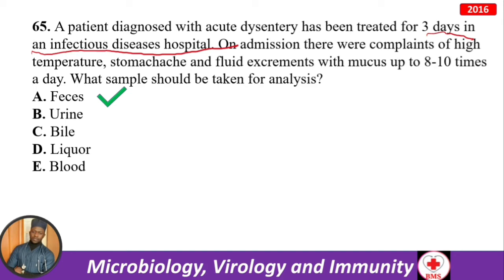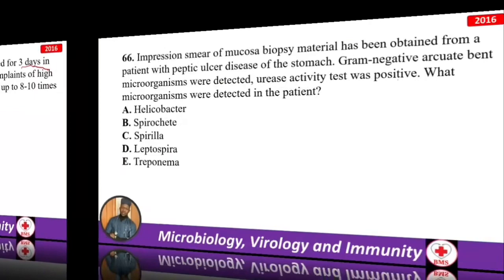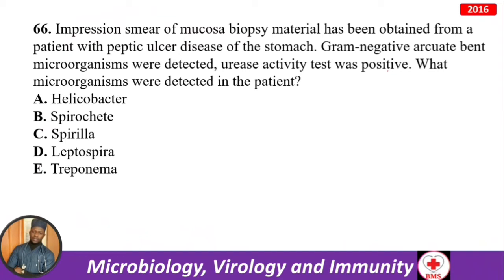Impression smear of the gastric mucosal biopsy from a patient with peptic ulcer: gram-negative curved rod-shaped microorganism detected; urease activity test was positive. The microorganism detected is Helicobacter pylori (H. pylori) — urease-positive and a cause of peptic ulcer.